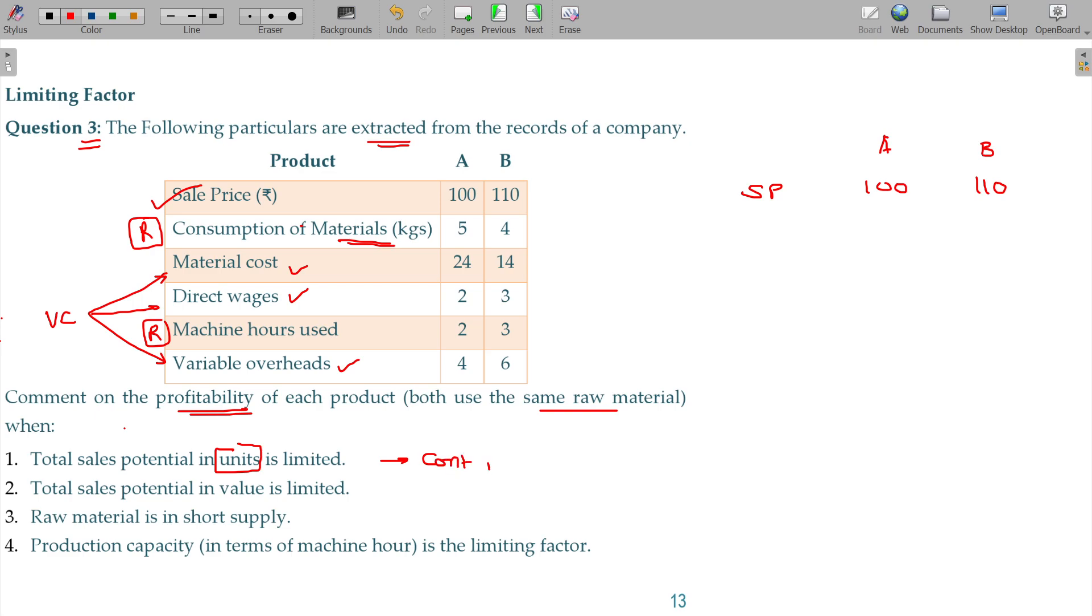Contribution per unit. Sales potential in value - we have to decide based on PVR. Raw material is in short supply - contribution per kg. Production capacity in terms of machinery is the limiting factor - contribution per machine hour.